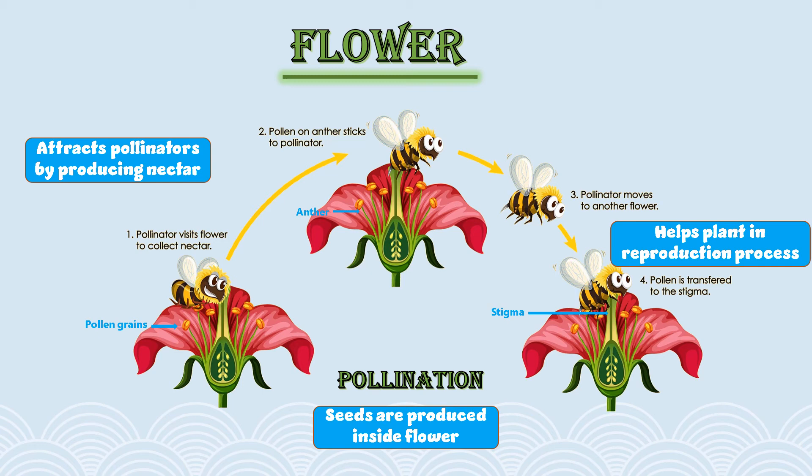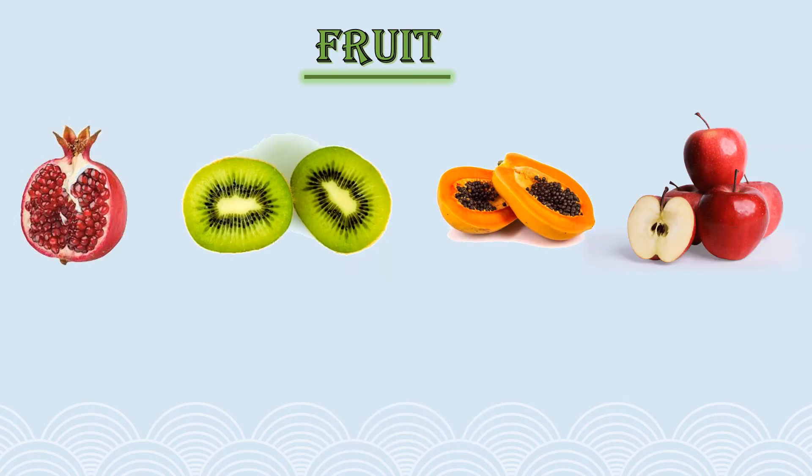Now we understand why the flower is so important for the reproduction process — because the seeds which we sow for the growth of a plant are produced inside the flower. Once the seed is produced in the flower, the flower gets converted into the fruit.